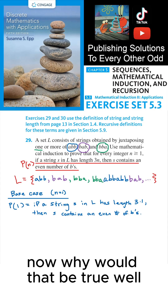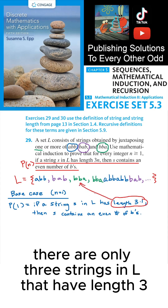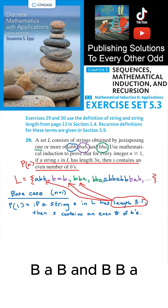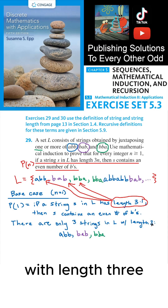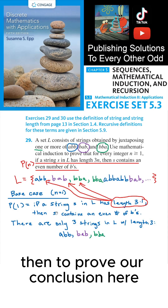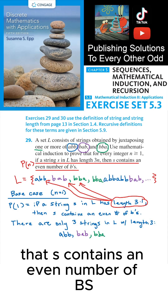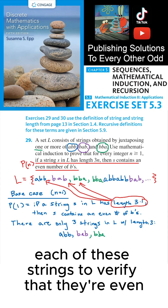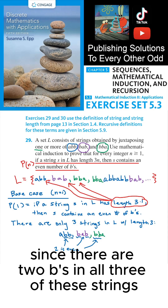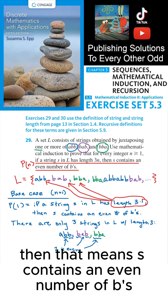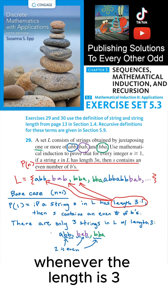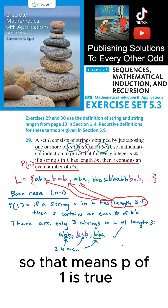Why would that be true? There are only three strings in L that have length 3, specifically ABB, BAB, and BBA. Since there are only three strings in L with length 3, to prove our conclusion that S contains an even number of Bs, we just have to count the number of Bs in each of these strings to verify that they're even. Since there are two Bs in all three of these strings, and since 2 is even, S contains an even number of Bs whenever the length is 3. So P of 1 is true.